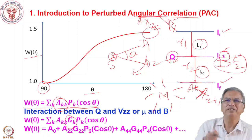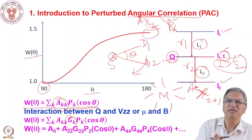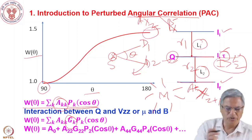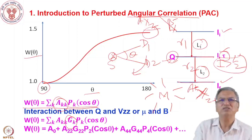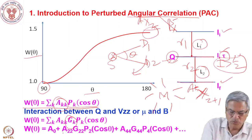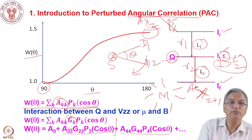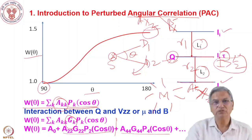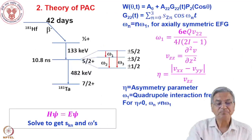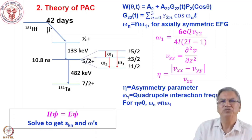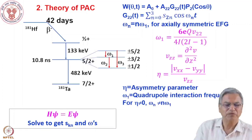One can expand the Legendre polynomial: W(θ) = A₀ + A₂₂·G₂₂·P₂(cosθ) + A₄₄·G₄₄·P₄(cosθ). Normally we take only the second-order term; the fourth-order term is also important but requires a more elaborate arrangement. Let me go into more detail about the theory of perturbed angular correlation and give an example of a probe atom. 181Hafnium is a beautiful nucleus for perturbed angular correlation.